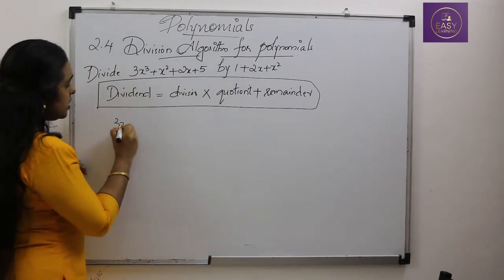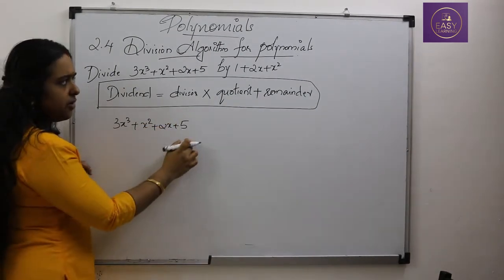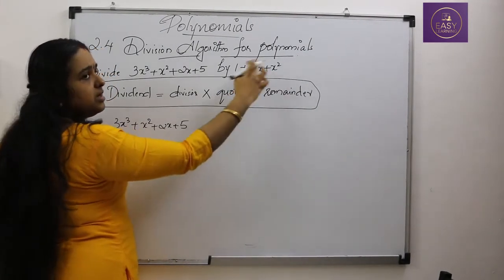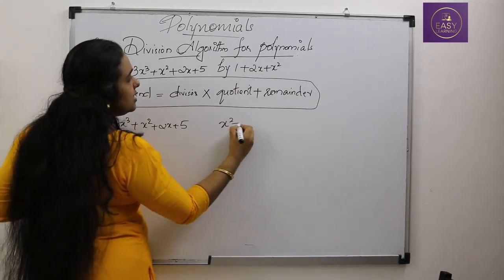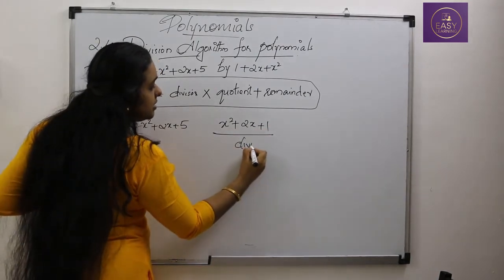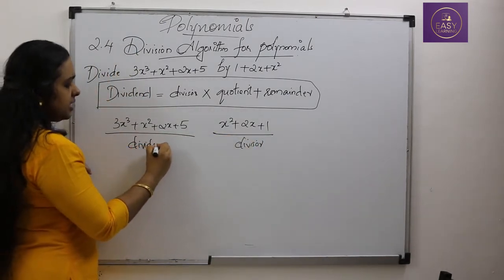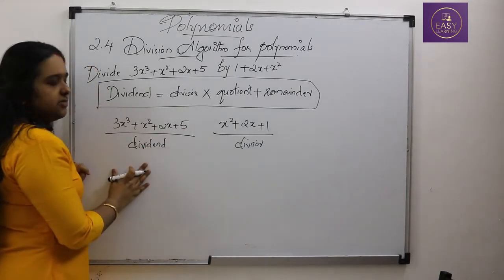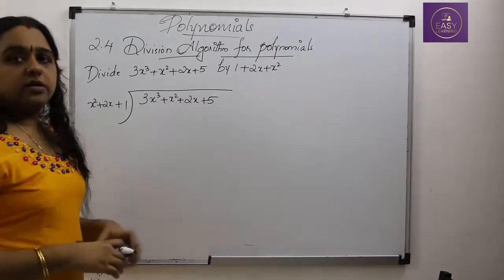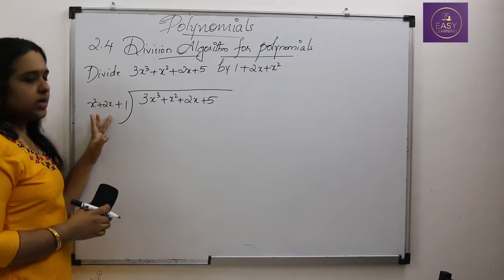So our dividend in general form is 3x³ + x² + 2x + 5. The divisor 1 + 2x + x² written in general form is x² + 2x + 1. So we are going to divide 3x³ + x² + 2x + 5 by x² + 2x + 1.